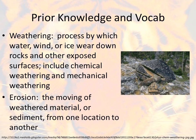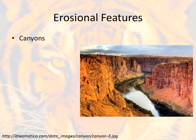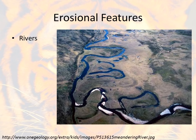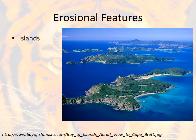Erosion is the actual moving of that weathered material or sediment from one location to another. When we're talking about erosional features, these are some of the common items you would see on the surface of the earth. We'd be looking at things like canyons, deltas — when a river empties out into a sea or ocean, the sediment fans out in a triangle shape — mountains, rivers, and islands. All these are classic examples of erosional features.